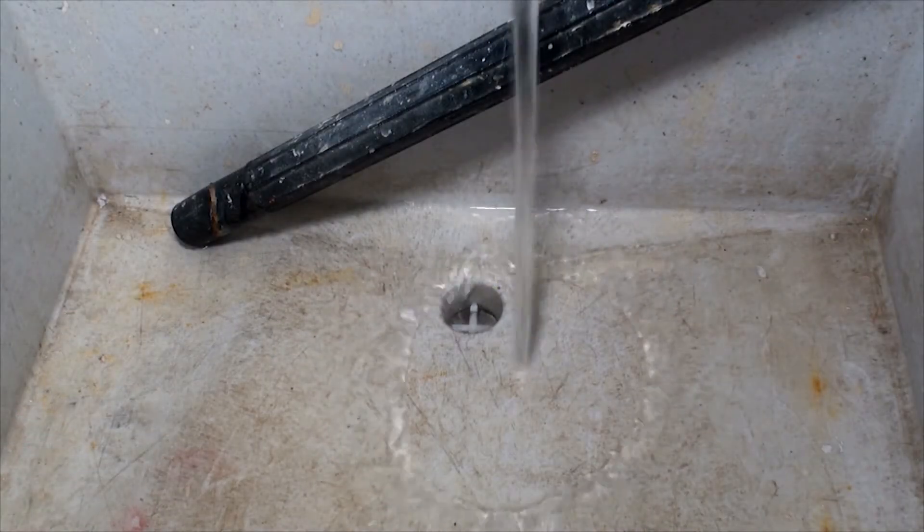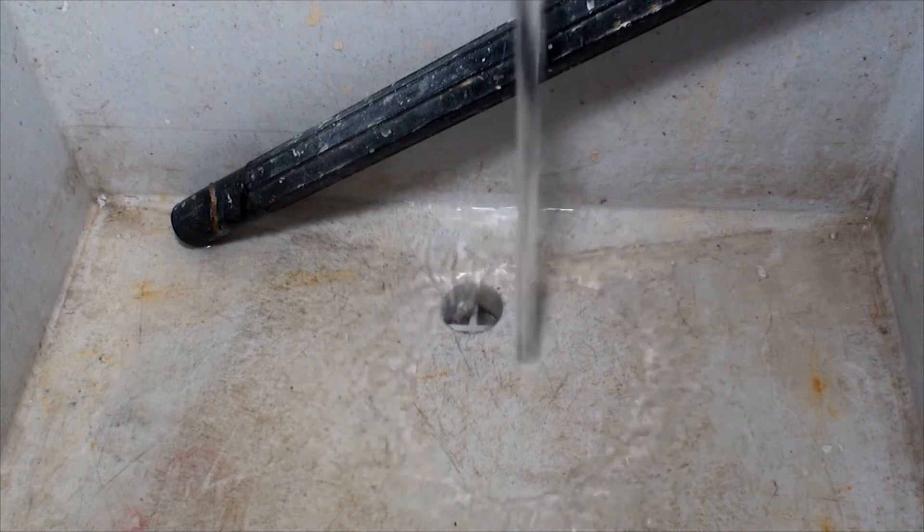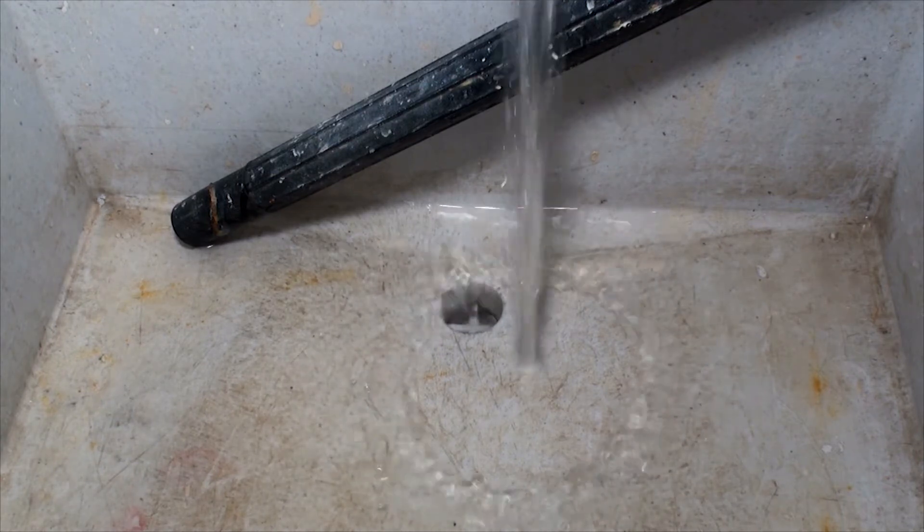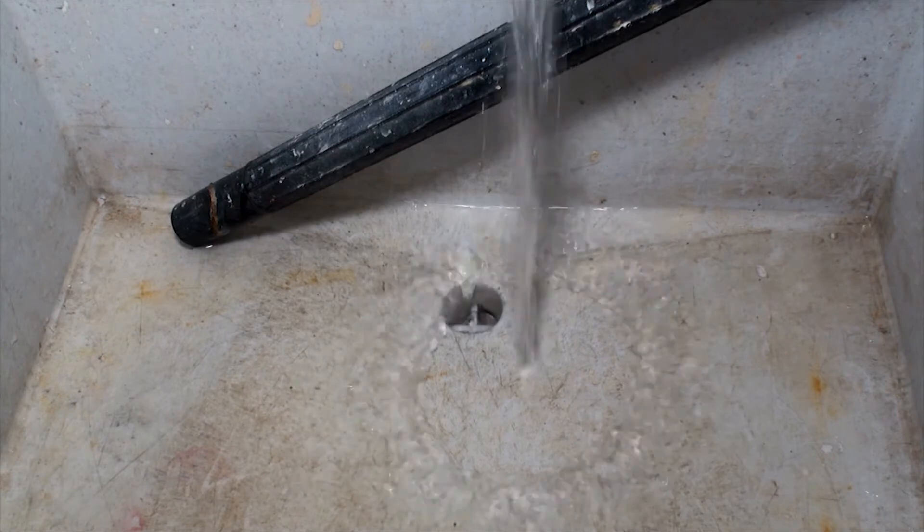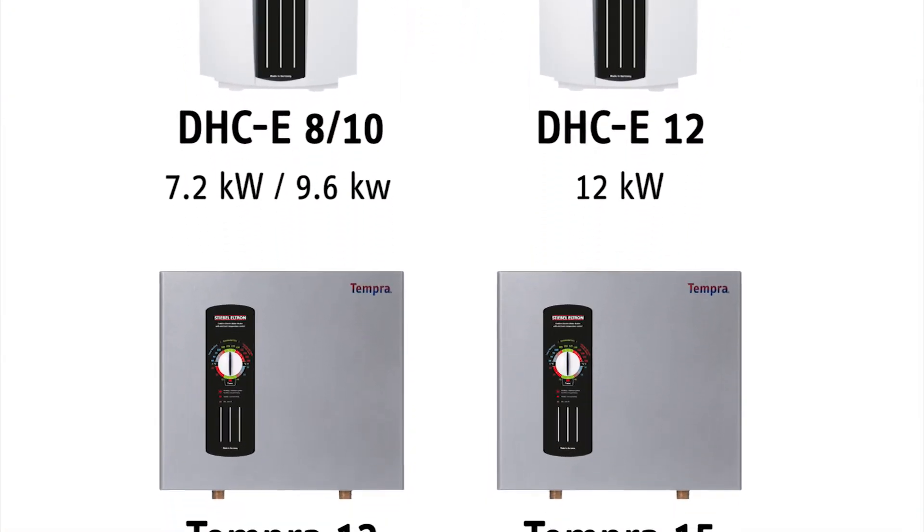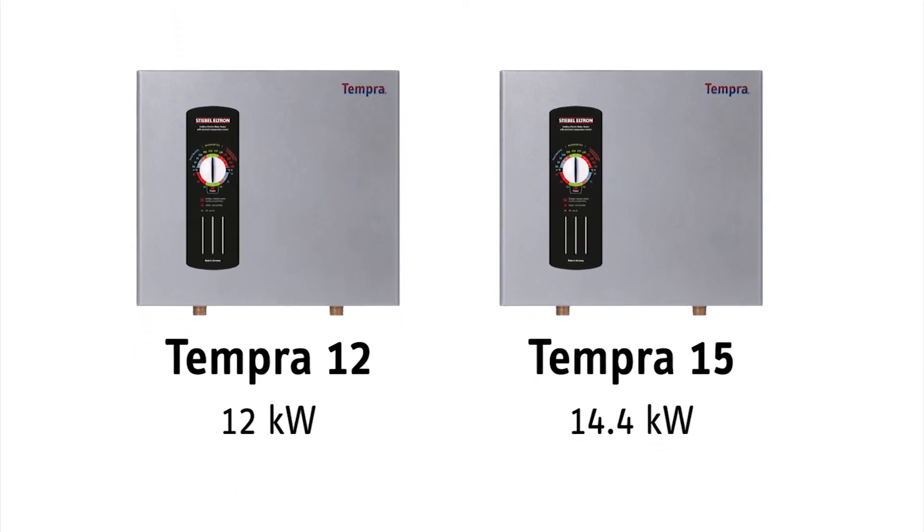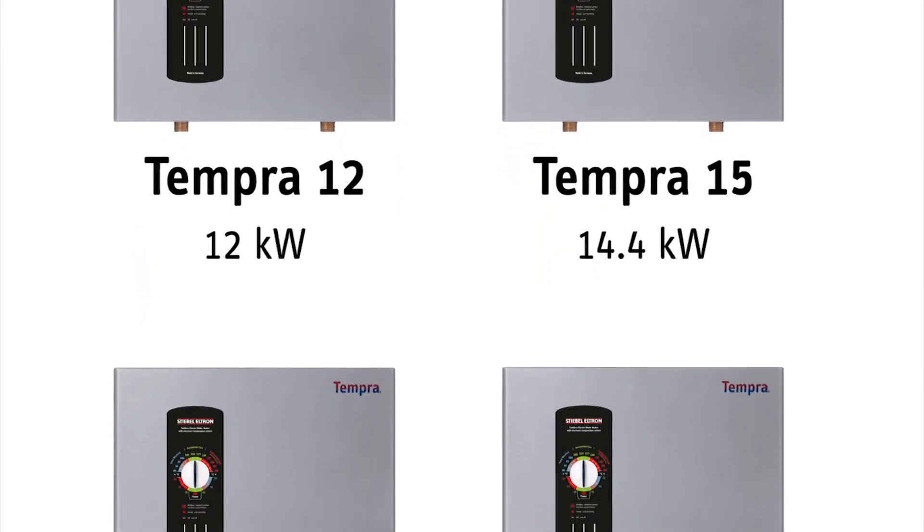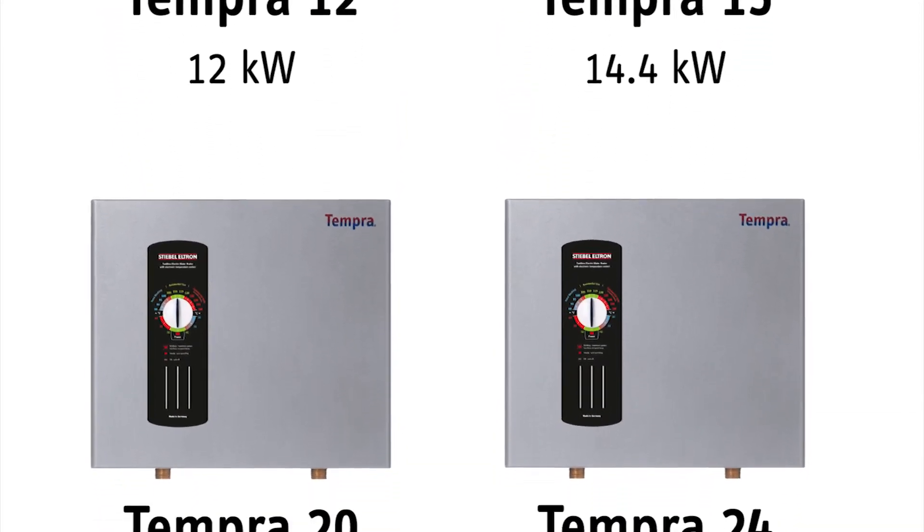At the high end for sink flow rates is a commercial or janitor sink. These can flow water up to 4 gallons per minute or more. Depending on the exact flow rates and how hot the water needs to be, a commercial sink may even need one of our smaller whole house Tempra models to supply enough hot water.